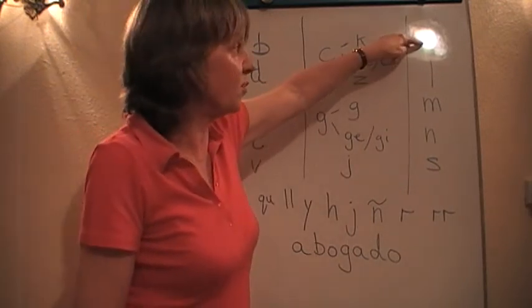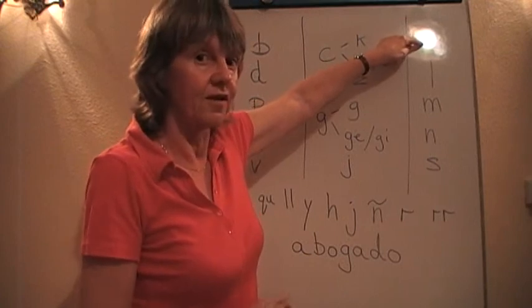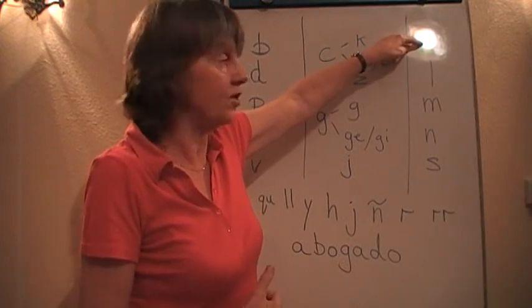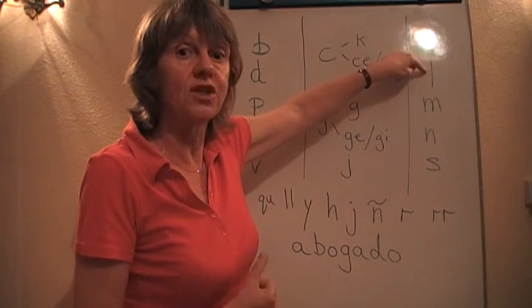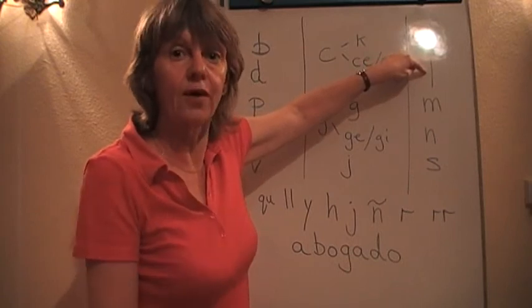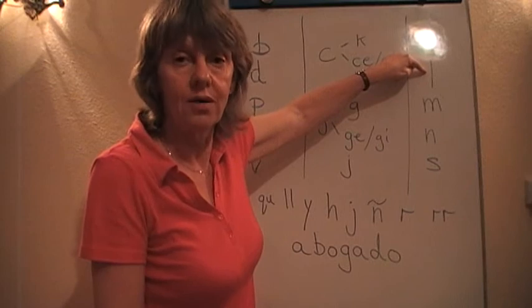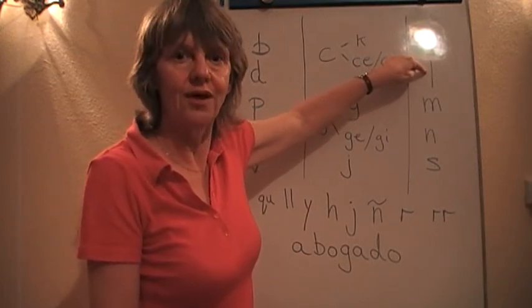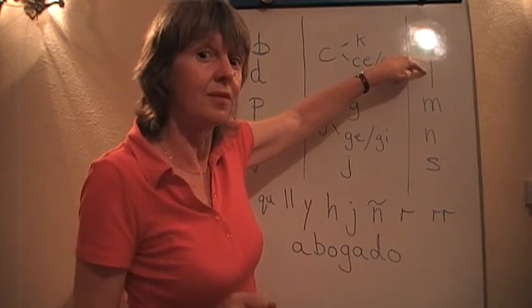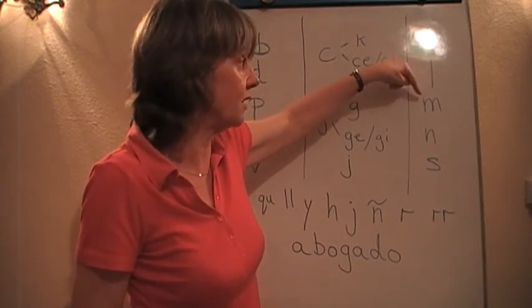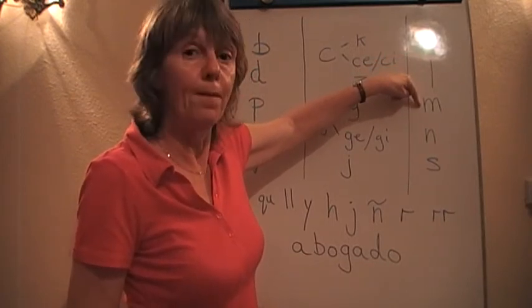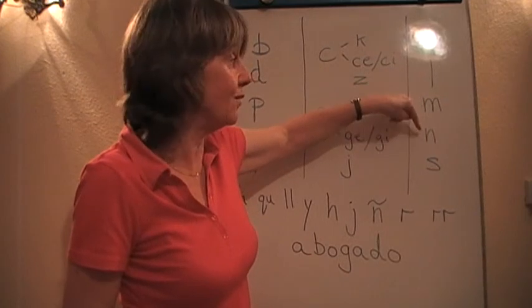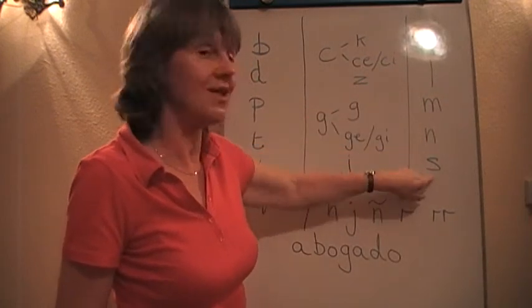Then here are some consonants that are pretty well the same as in English. We've got the F, the efe, which is a F, the ele, which is a L, but it's actually strong. That one is stronger than English. So you've got azul, my favourite word, meaning blue, and you have a strong L. You hear the L at the end and you hear it in the middle of words as well. The M which is eme, N which is ene, S which is ese.